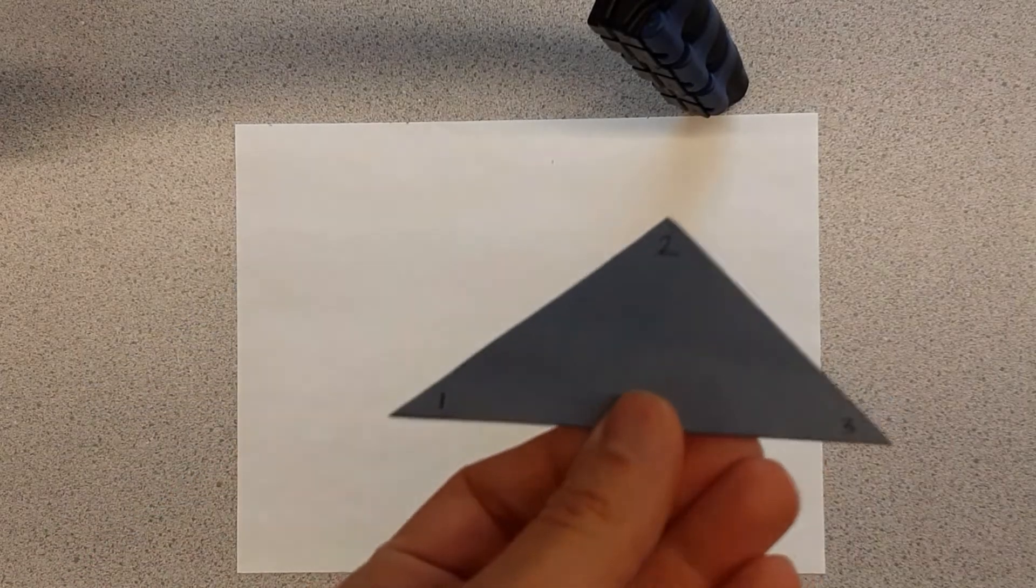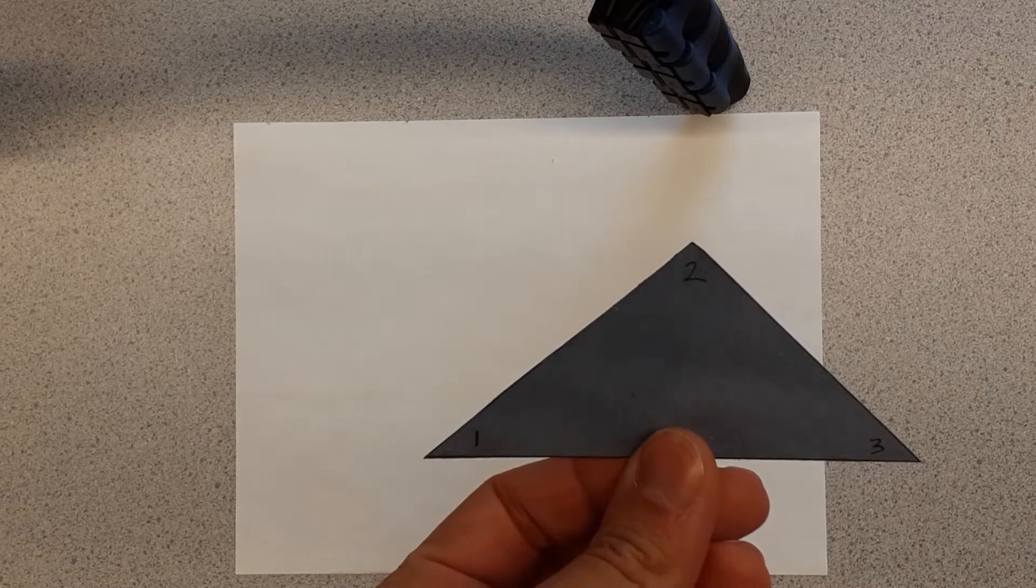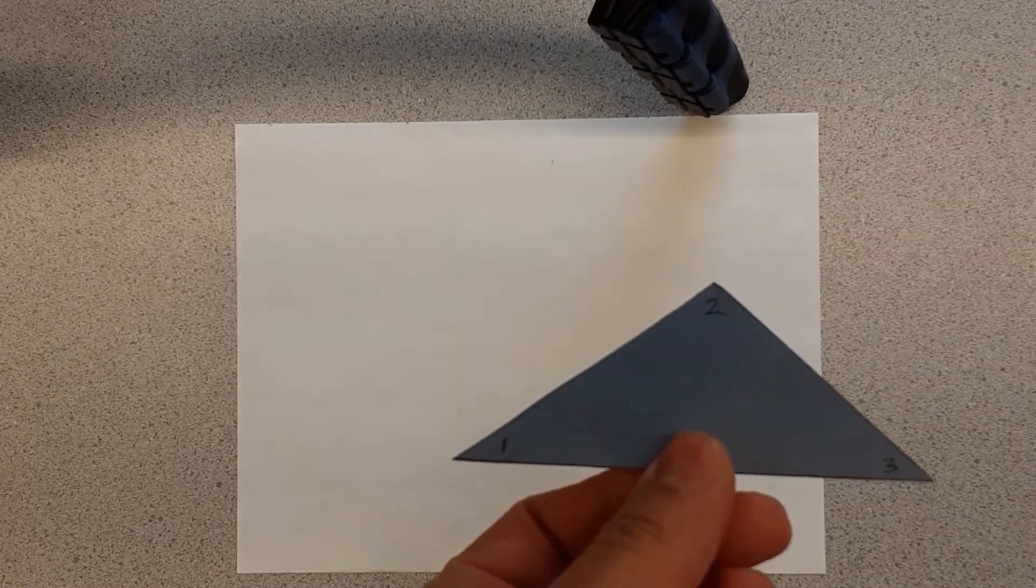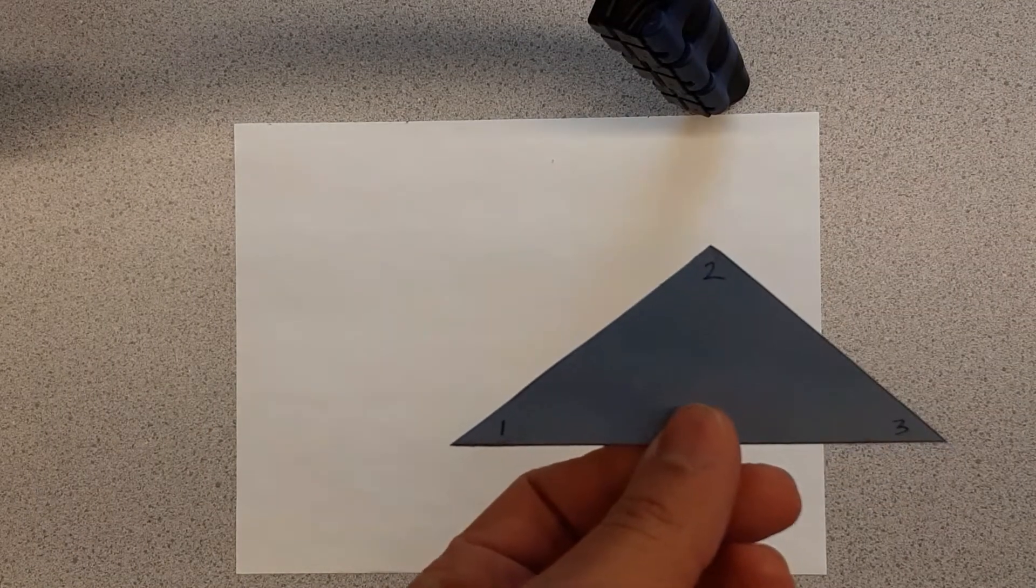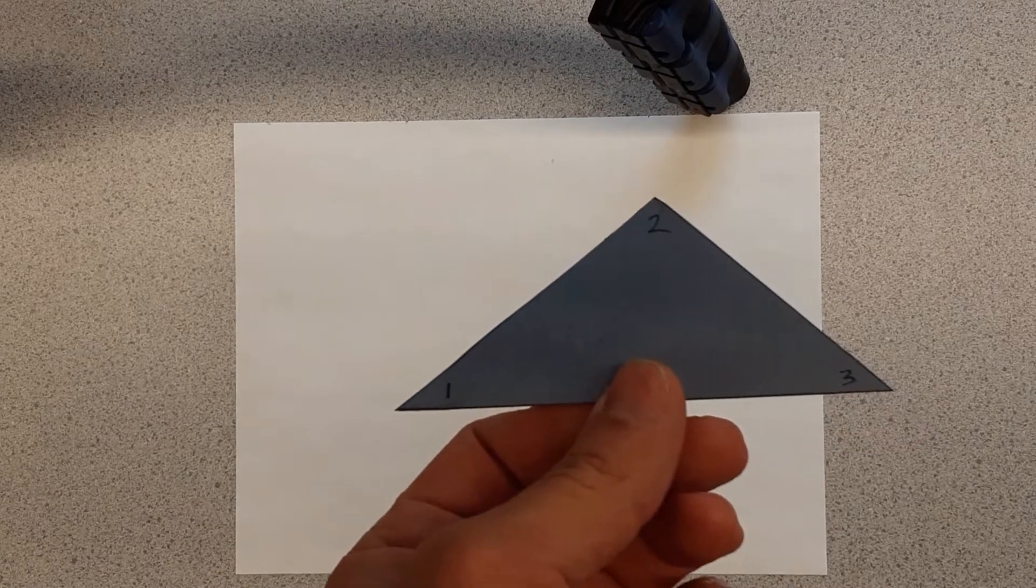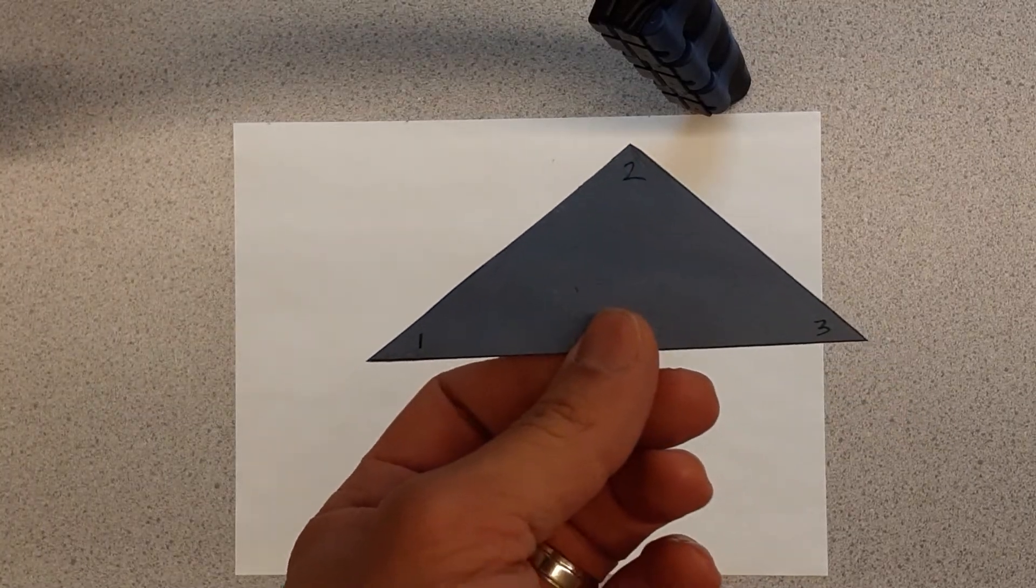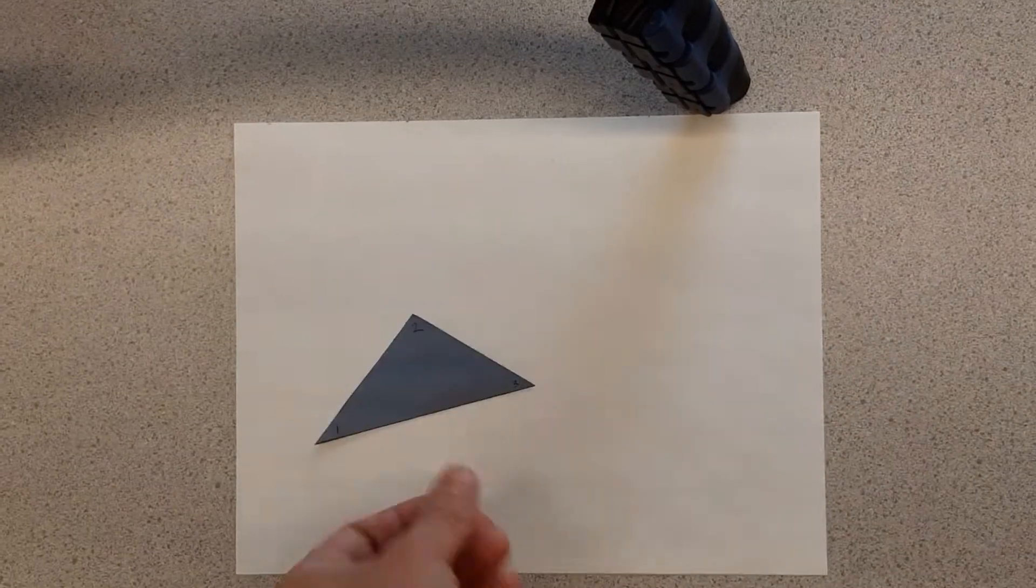But what if we had a triangle that doesn't have three equal sides and three equal angles? So I've cut one out here. Again, I've labeled my corners, my vertices as one, two, three, and there's two different ways that I can tessellate this. So I'm going to show you how to do both methods.